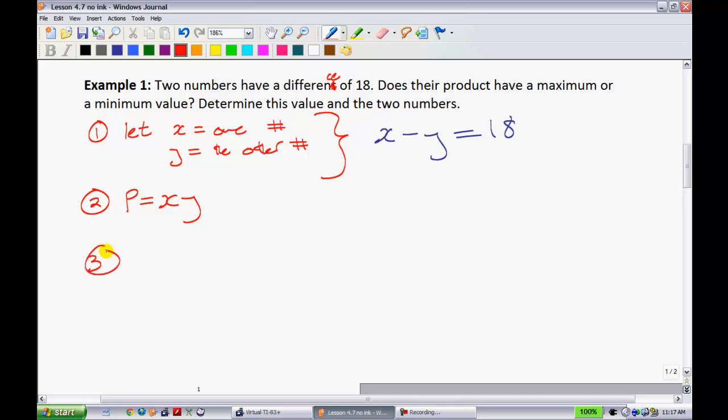Does their product have a maximum or minimum value? Determine this value and the two numbers. So, step one, what we're going to do is we're going to use a let statement. So it says two numbers. So I'm just going to define what my two numbers are. I'm going to let X equal one number. And I'm going to let Y equal the other number. Nothing too crazy so far. Now, what do they tell me about these two variables? Well, it says the two numbers have a difference of 18. So I'm just going to start there with an equation. I'm going to make this in blue. We have X minus Y is equal to 18.